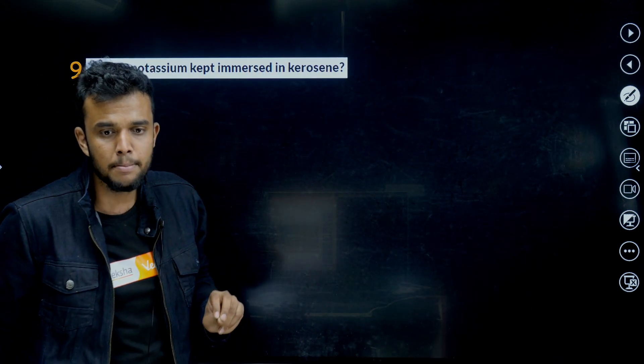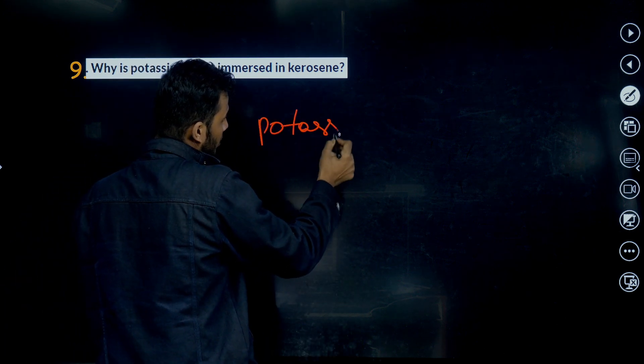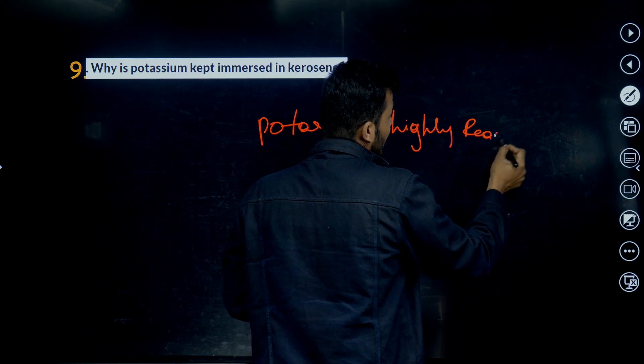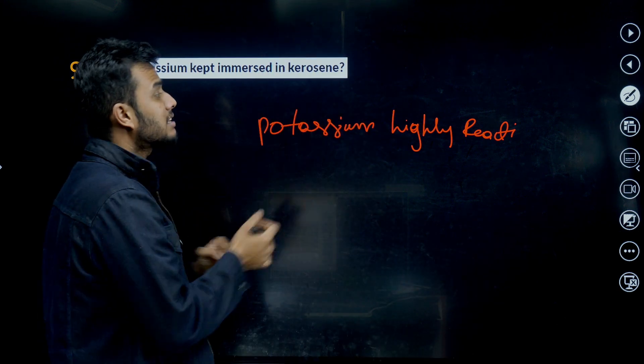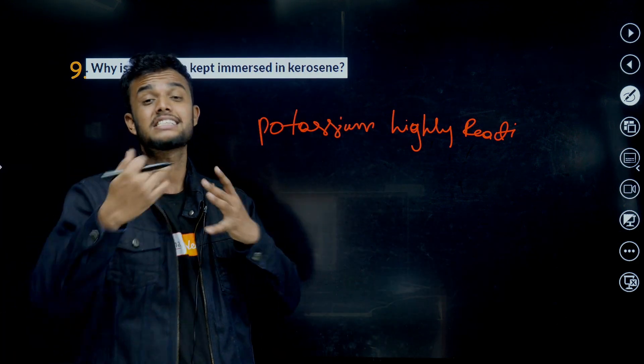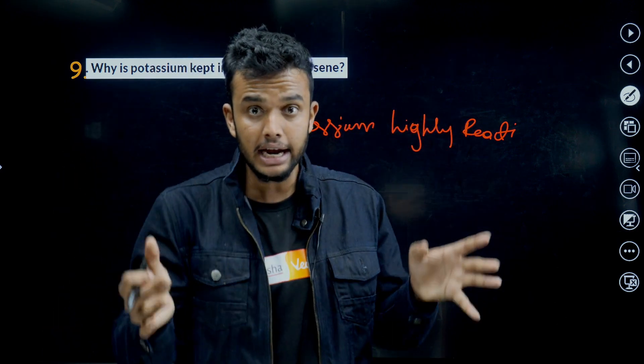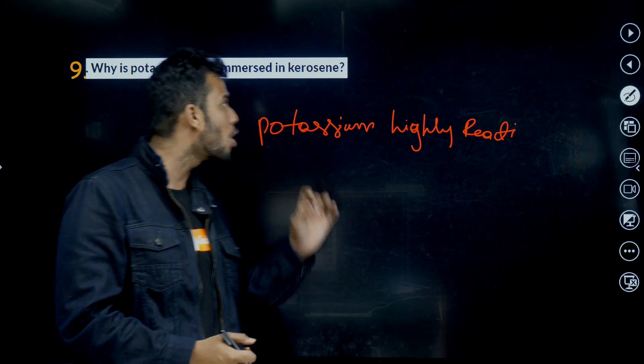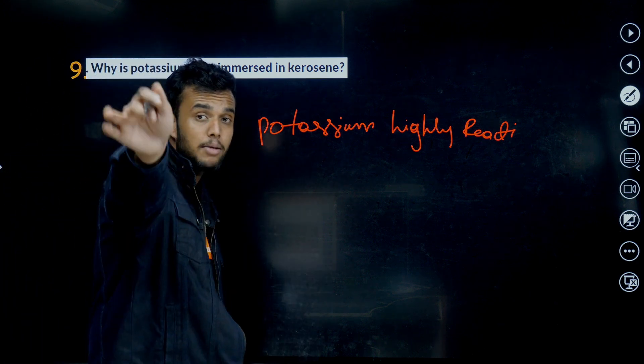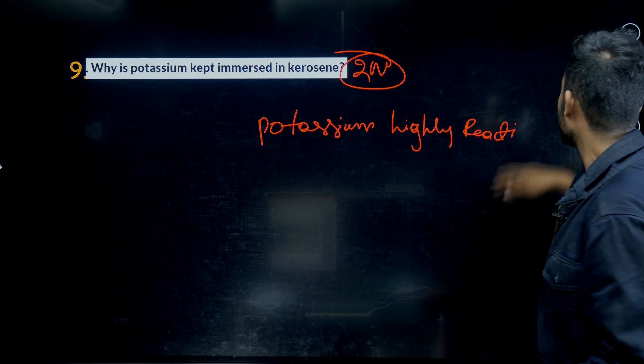Next question. Why is potassium kept immersed in kerosene? Because potassium and sodium are highly reactive metals. Potassium is a highly reactive metal. It has a high intensity or high affinity. It reacts with oxygen and catches fire. If we put sodium in open surface, it reacts with oxygen present in the atmosphere and forms potassium oxide and it releases a huge amount of heat. And also heat catches fire. That's why we always immerse potassium and sodium in kerosene. Very important question, two marks. Definitely students, please concentrate.